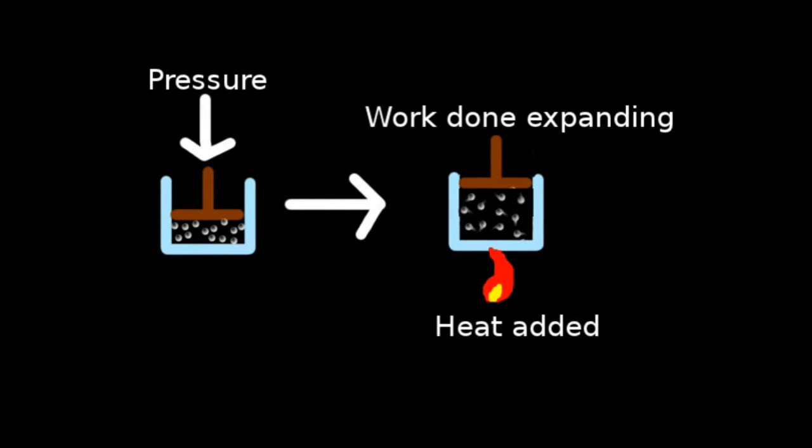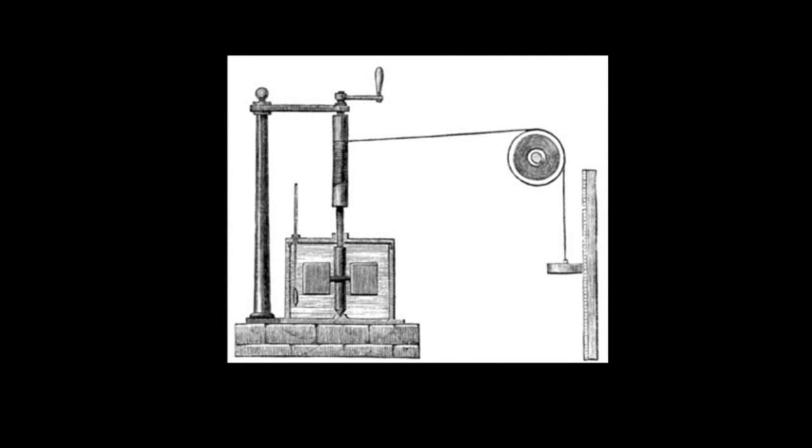So now that we have both the concept of work and heat, we can state the first law of thermodynamics. In an arbitrary thermodynamic transformation, that is when you change some of the thermodynamic properties of the system, then the change in energy of the system is actually the change in the heat absorbed by the system take the work done by the system. This law was established by James Joule, born in Salford, England in 1818.